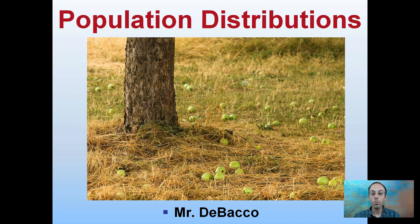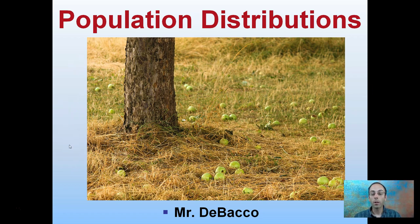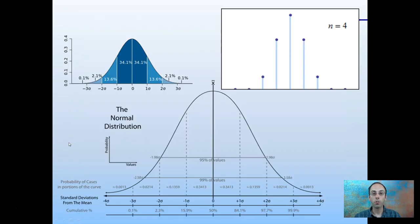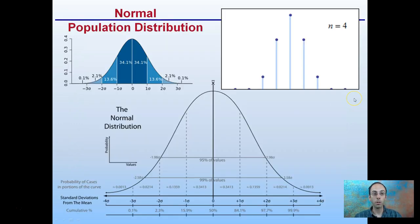Here we're looking at population distributions. If you look at this image and the apples in it, we can see how they're distributed. It's kind of a random distribution. However, if we zoom out from this one particular image and look at the entire field, we'd see that odds are these apples would be concentrated in one area. So let's look at population distributions in a little bit more detail.